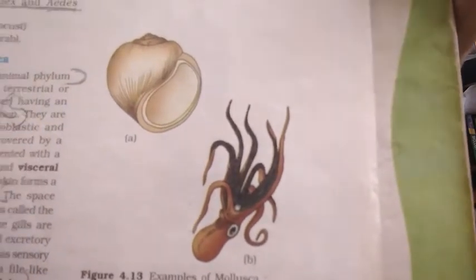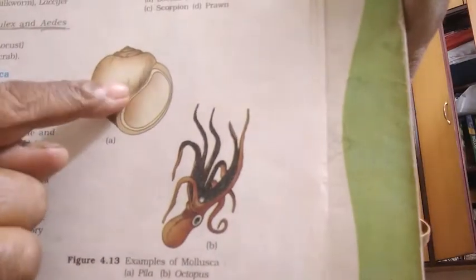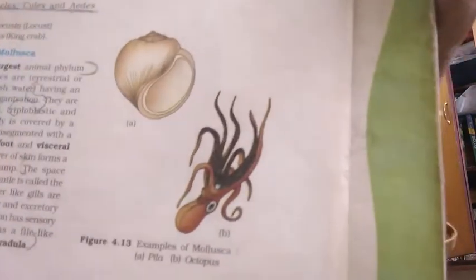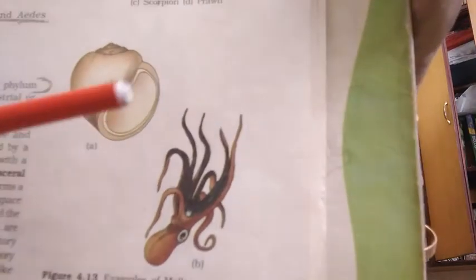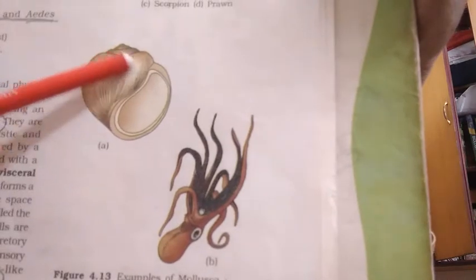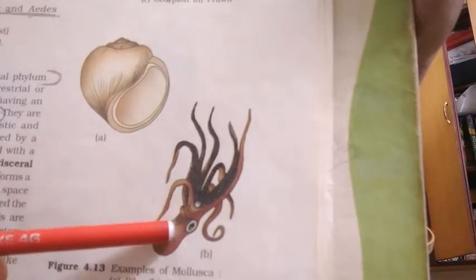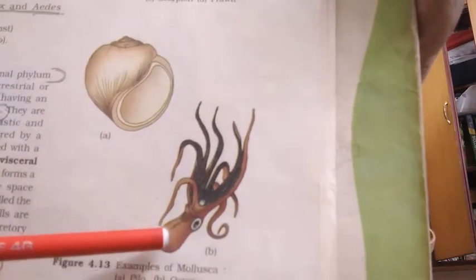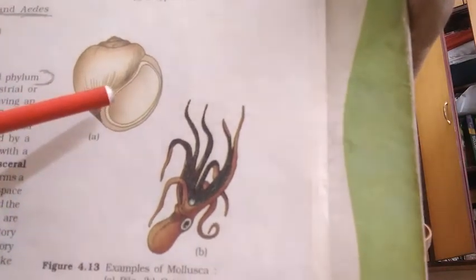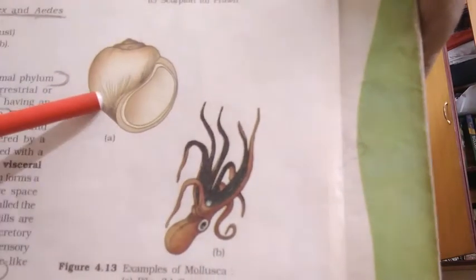Their body is generally covered with a calcareous shell. It is not that always the calcareous shell will be just the external covering of the body. Sometimes internal shell also develops, like in octopus. But calcareous shell made of calcium carbonate will be there.